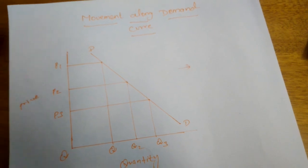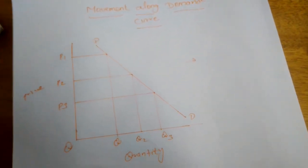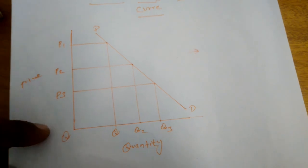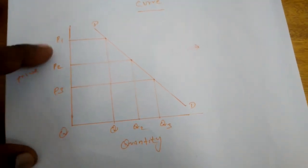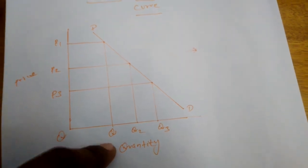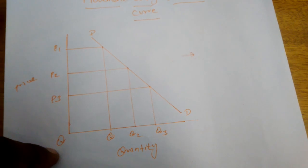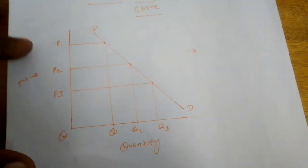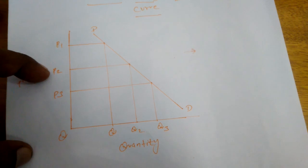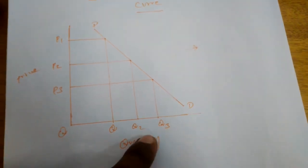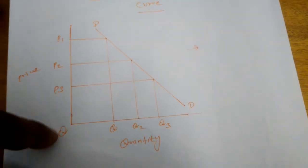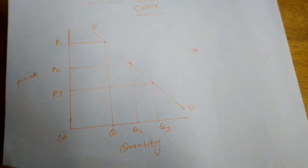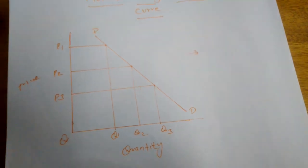This is called movement along the demand curve. The demand curve itself will not change, but the quantity of commodity will change along it. In the diagram, when the price is OP1, the quantity demanded is OQ. If the price decreases from P1 to P2, the quantity increases from OQ to OQ2. If price decreases to P3, quantity increases to OQ3, but the demand curve always remains the same.